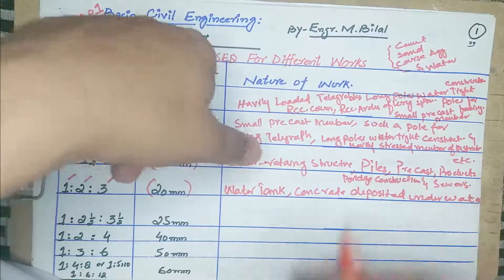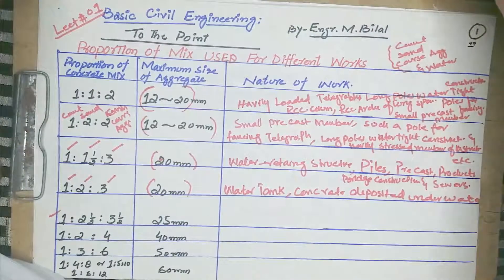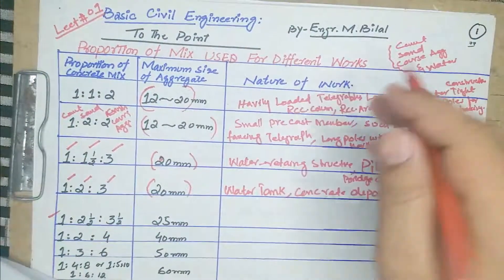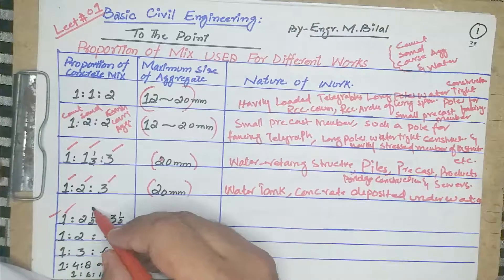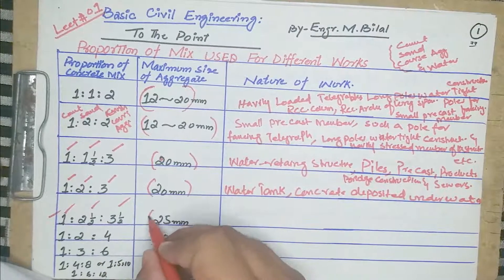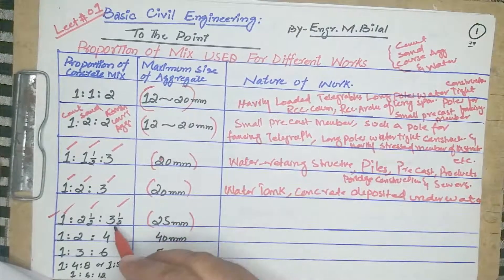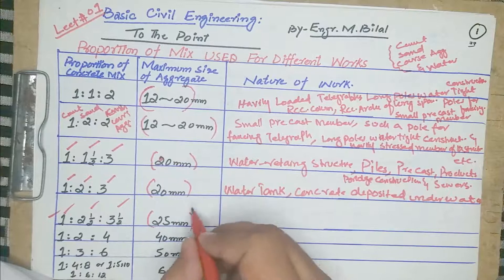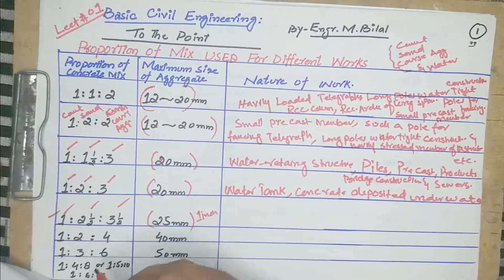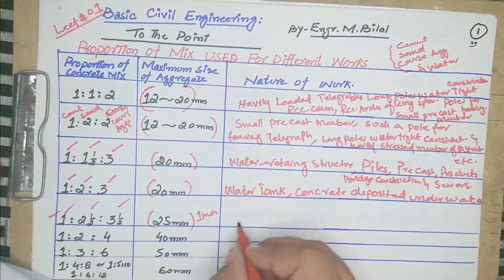The fifth proportion for the concrete mix is 1:2.5:3.5 — one part cement, two and a half parts sand, and three and a half parts coarse aggregate. The maximum size of aggregate used in this concrete mix is 25 mm, which is approximately one inch. This type of concrete is used in footpaths and road works.